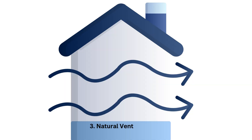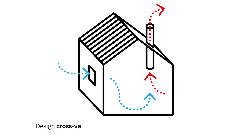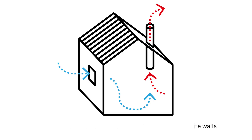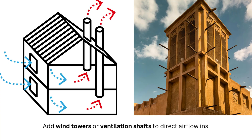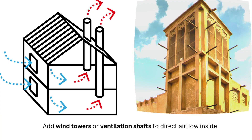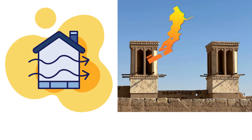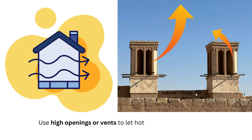3. Natural ventilation. Design cross-ventilation paths with openings on opposite walls. Add wind towers or ventilation shafts to direct airflow inside. Use high openings or vents to let hot air escape — the stack effect.